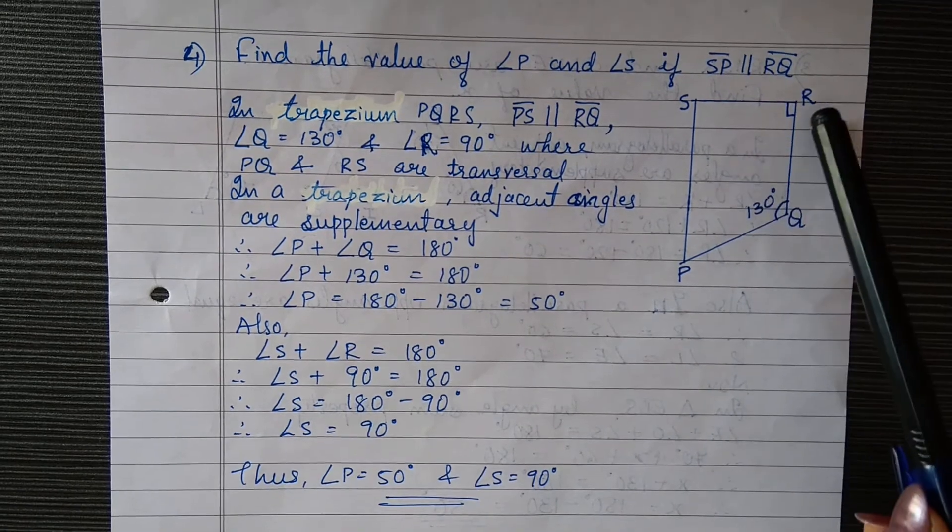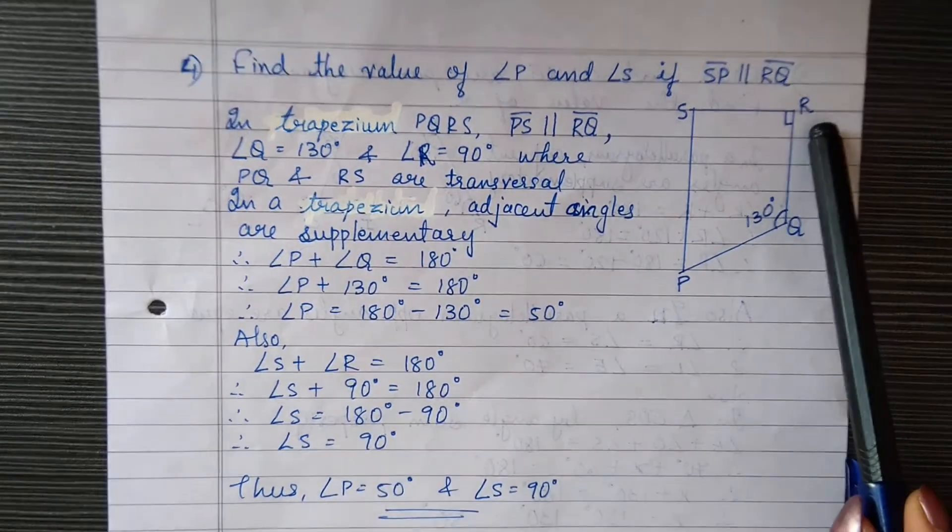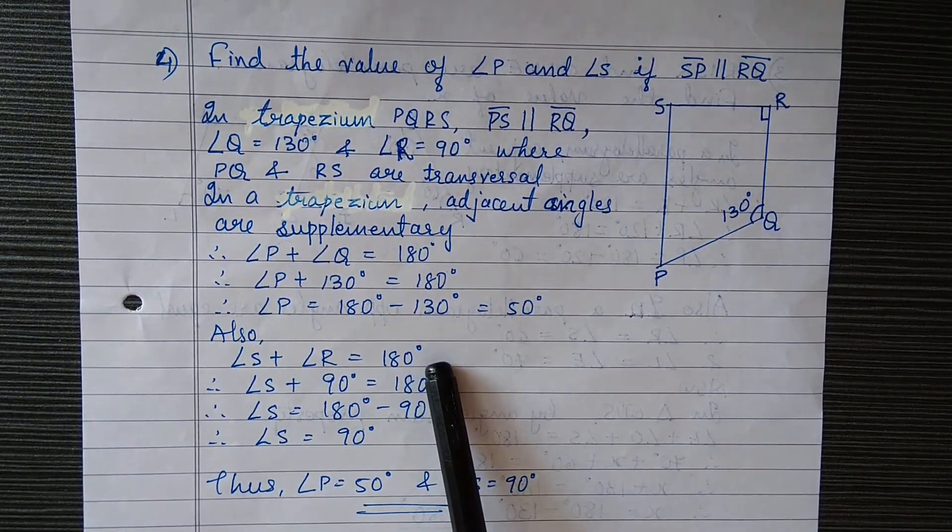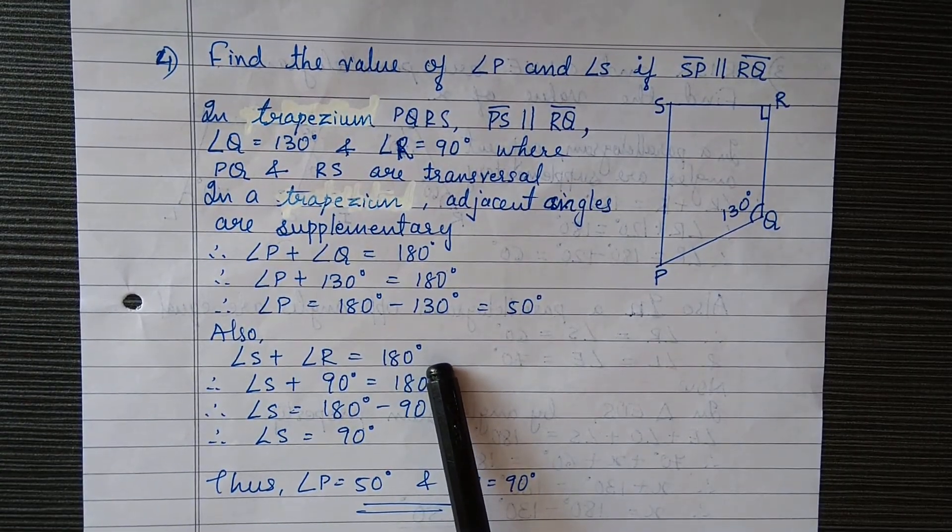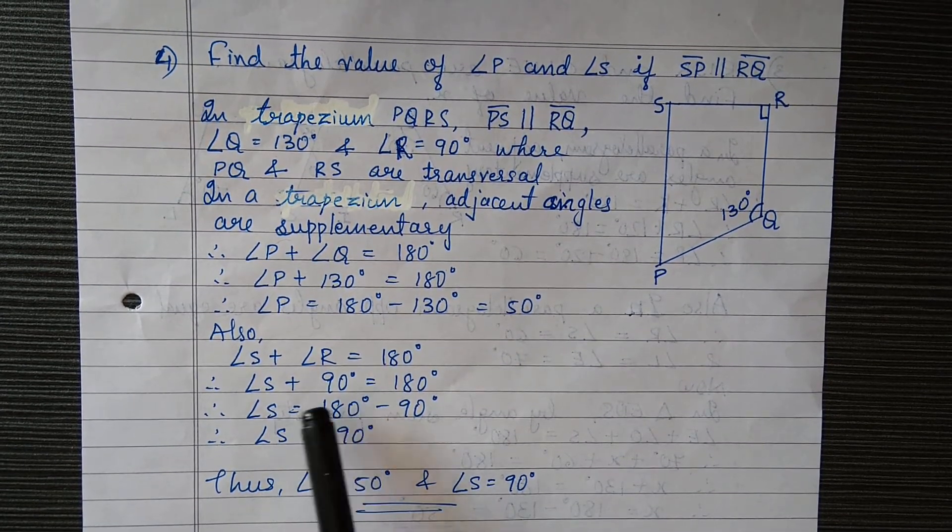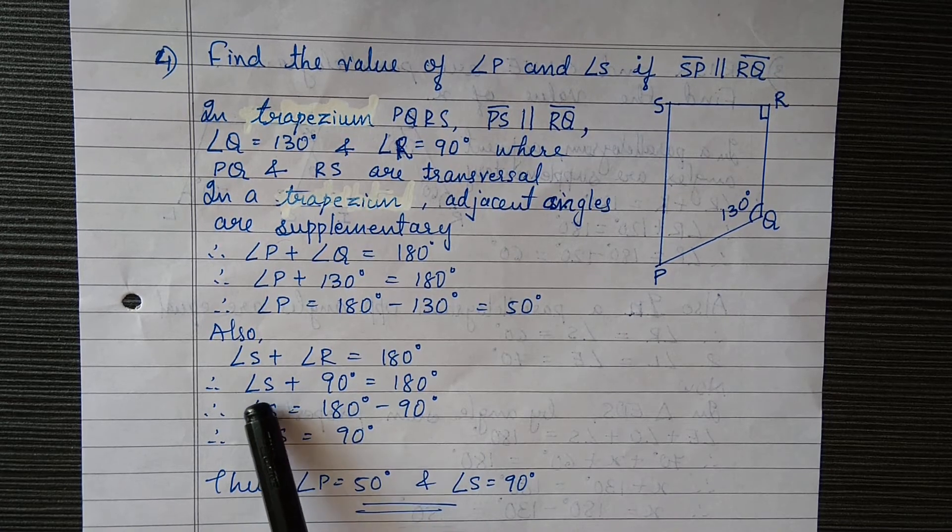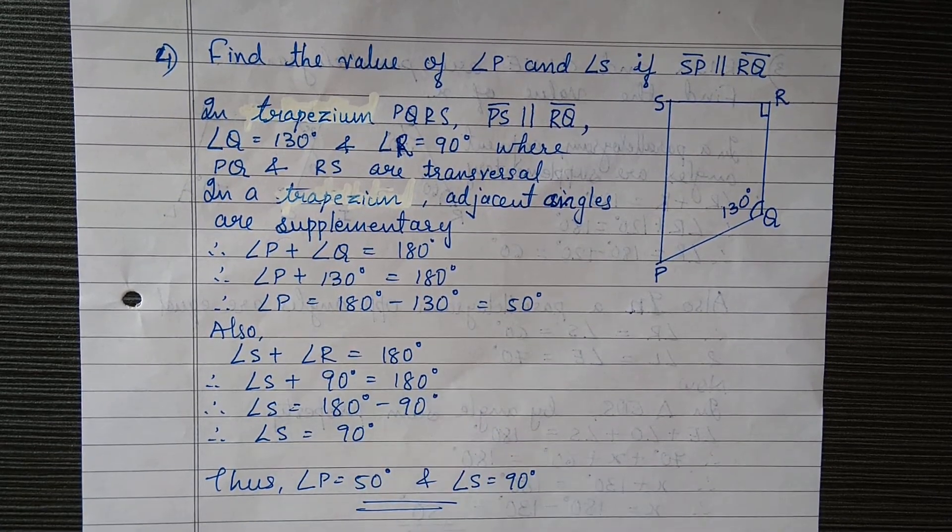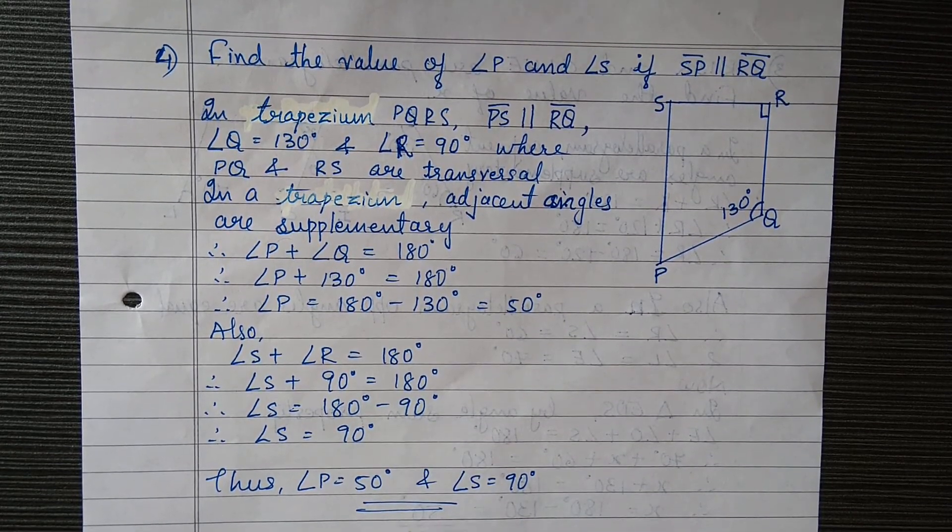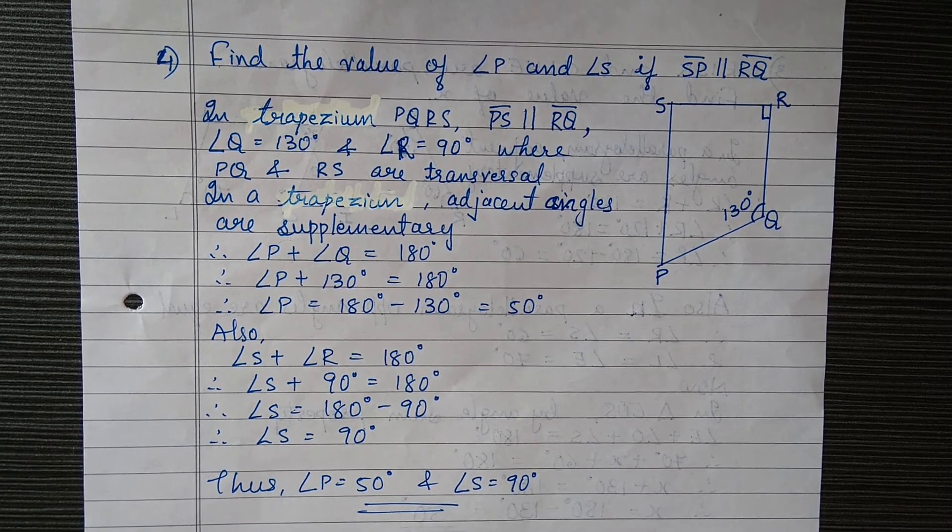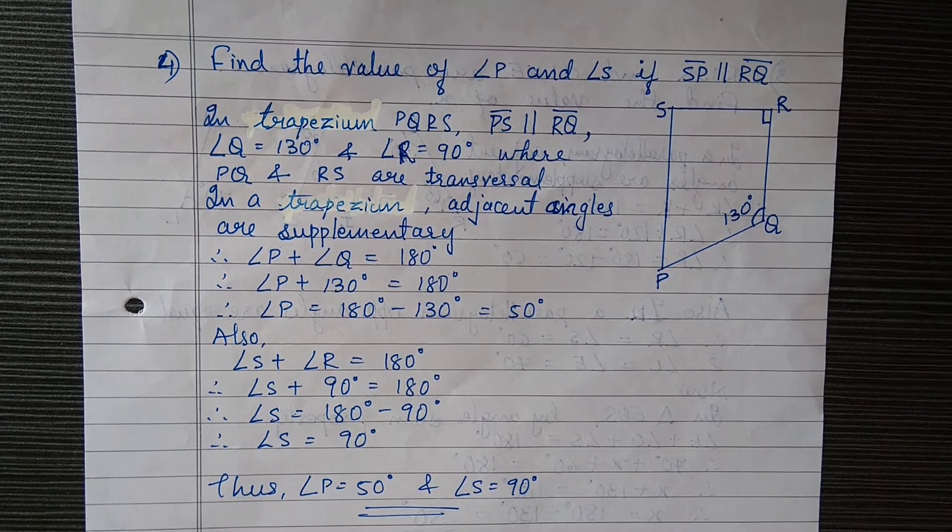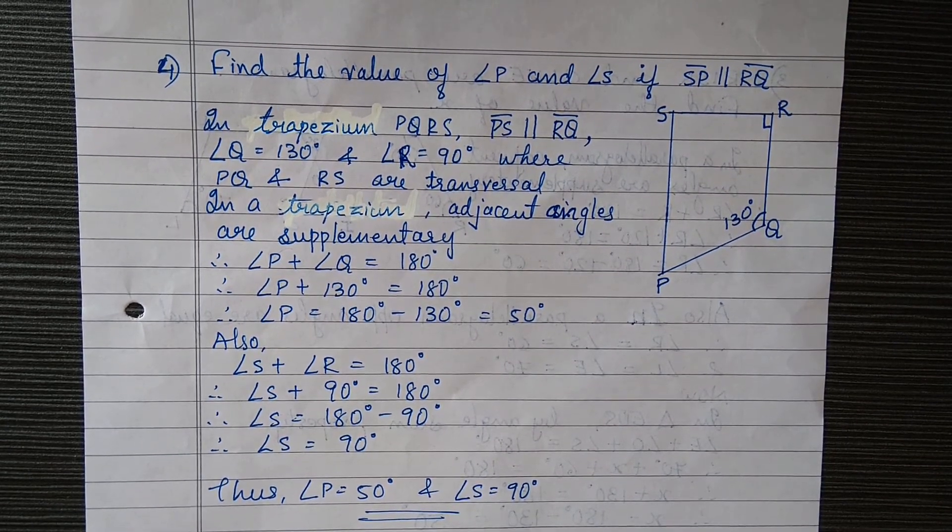Here also, angle S plus angle R will also equal 180 because they are also adjacent angles and supplementary. We know the value of R is 90, so angle S plus 90 equals 180. Therefore, angle S will be 180 minus 90, which is 90 degrees.